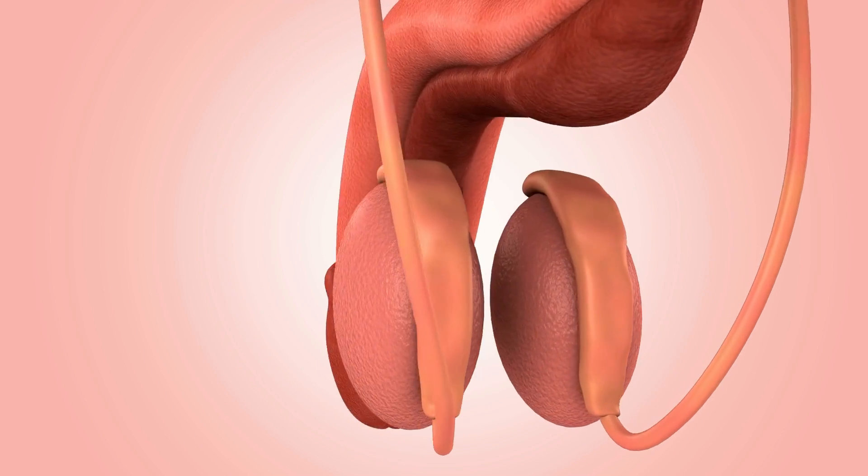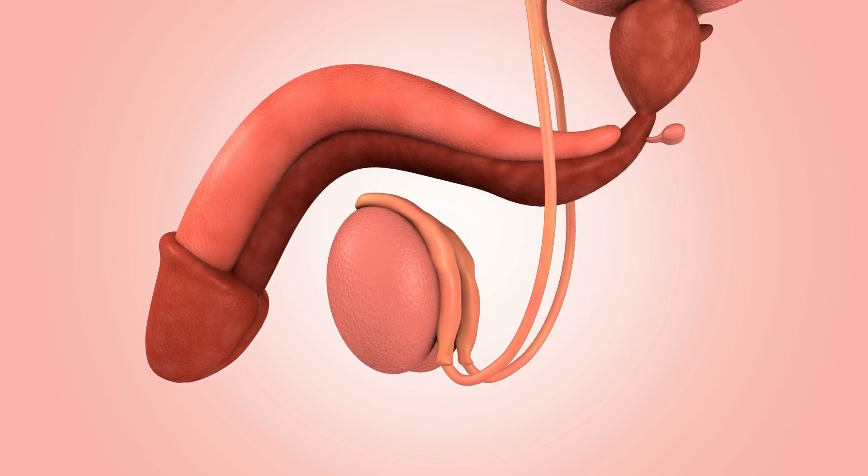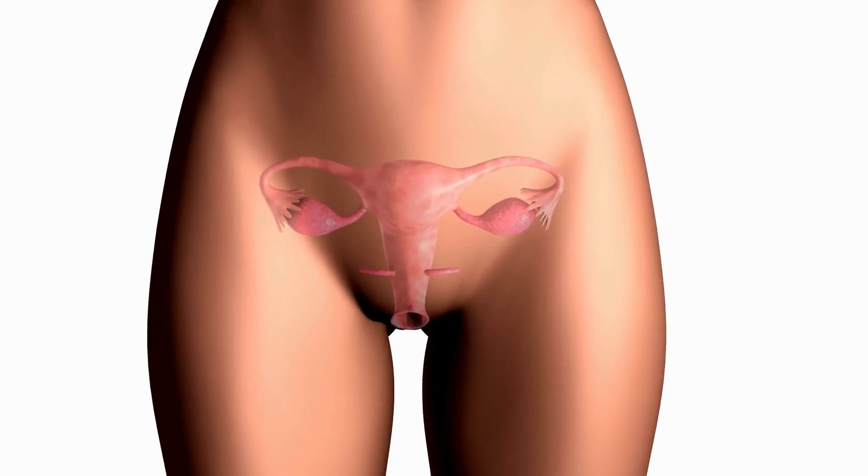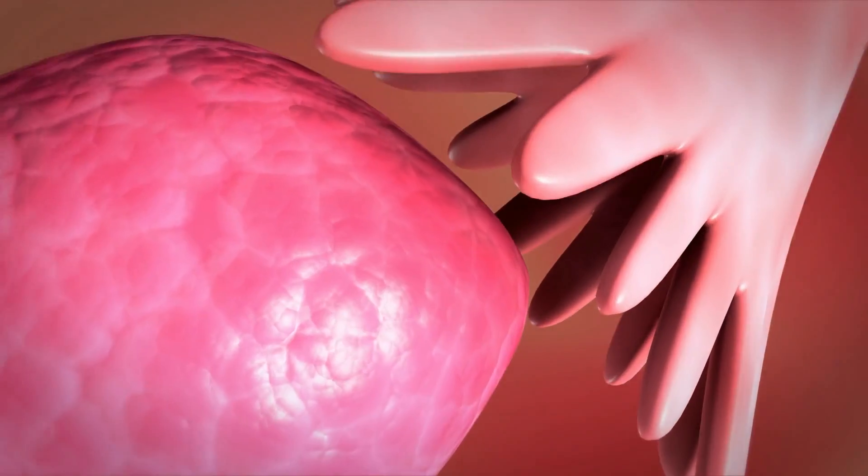The second part of the external genitalia is the scrotum. The scrotum is essentially the skin around the testicles and it serves two very important functions: one is it protects the testicles, and two, men's testicles hang outside their body because for optimal sperm production the temperature of the testicles needs to be slightly lower than body temperature. This is exactly why testicles are outside the male's body rather than internal like female ovaries.